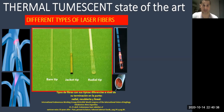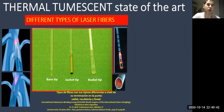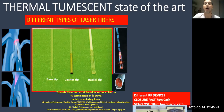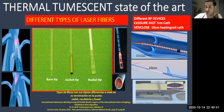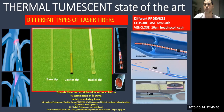There are different types of laser fibers: bare tip, jacket tip, radial tip, double ring, and two-ring radial fibers. There are also different radiofrequency devices — ClosureFast with a 7 cm catheter and VenaCure with a 10 cm heating coil catheter.